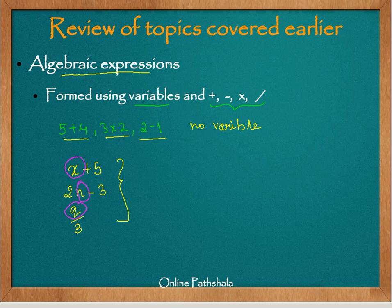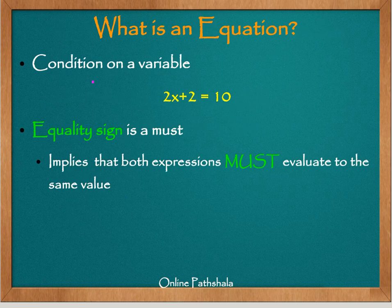Now let us continue further and understand what is an equation. We also discussed this in brief in our earlier chapter. So equation is nothing but a condition on a variable. It means the variable is supposed to satisfy a condition. And when that happens, we call that we have an equation.